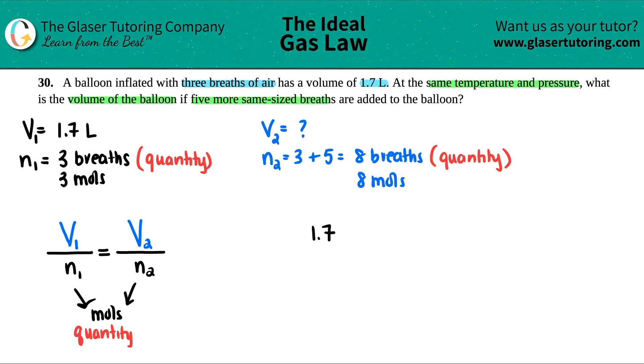So, I got 1.7 divided by three, and that equals V2, which is what we're solving for. So, I'm going to say X, and then this would be eight total. We do not put in the five here, because remember, we always need a total value. Eight breaths were added, so the total is eight. Now, this looks like a simple cross-multiplication. I got three times X equals 1.7 times eight. So, 1.7 times eight, I get 13.6 divided by three, and that gets rid of the three. So, X equals 13.6 divided by three.